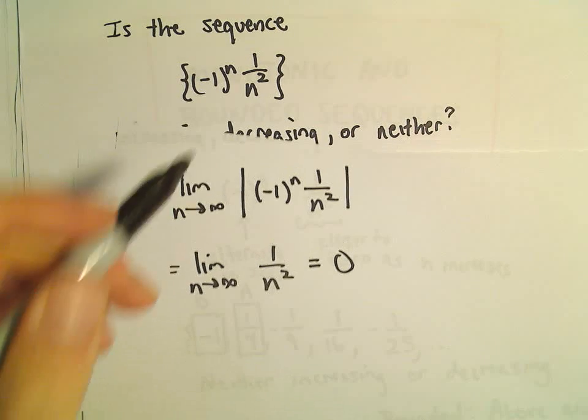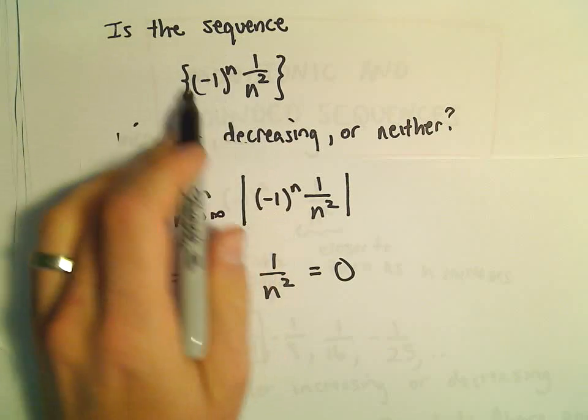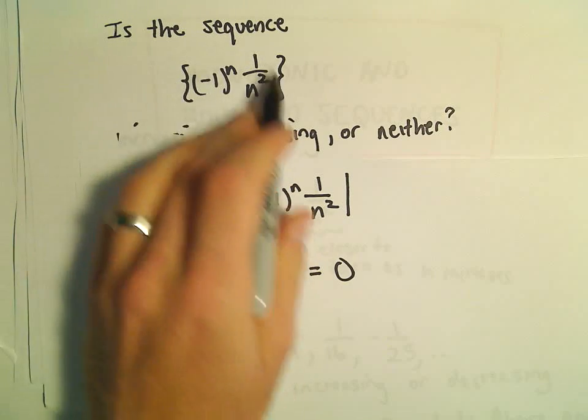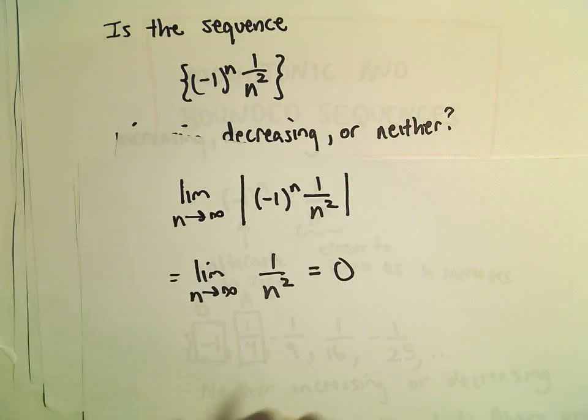And therefore, by the absolute value theorem, the original sequence, in this case, this particular sequence, it would also converge to 0.